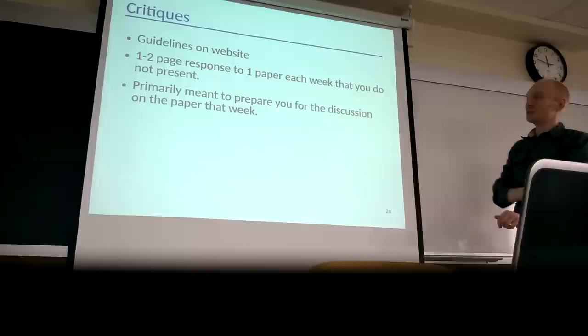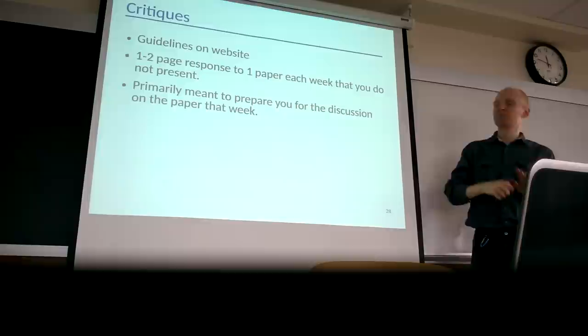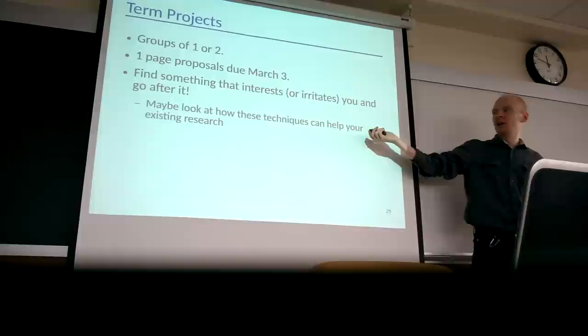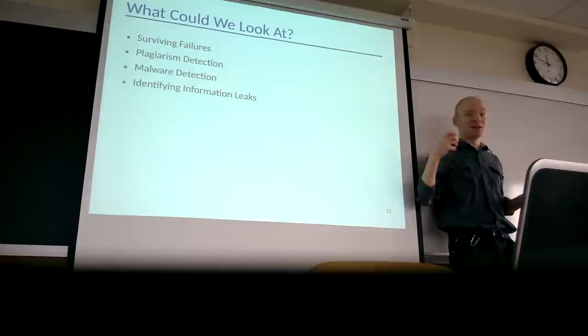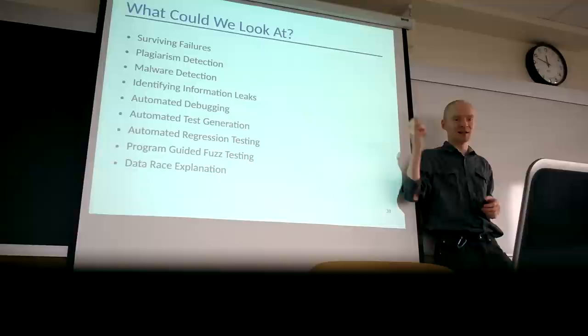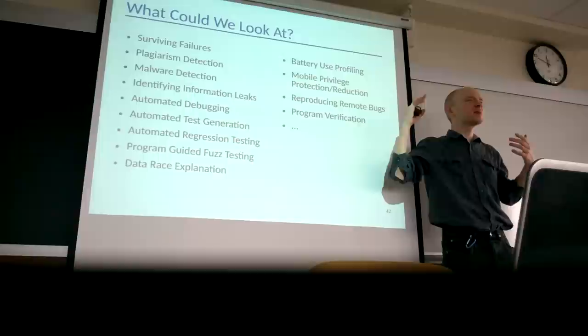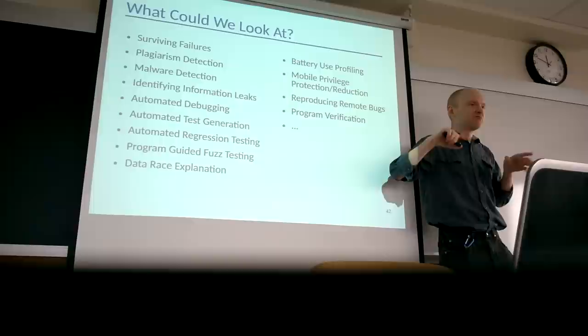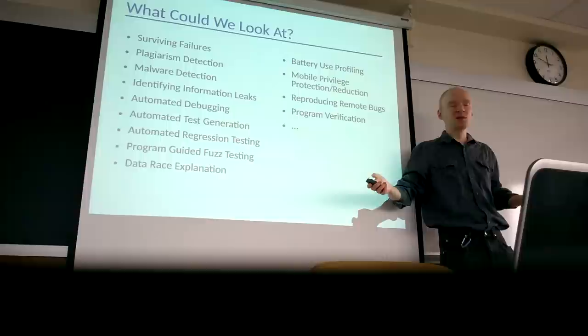In terms of critiques. Again, guidelines on the website. Mostly to prepare you for the discussion. There's a LaTeX template on the website as well for creating the critiques. Should be straightforward. So you can look at things like, in particular, how these techniques might help your research that you're doing. Or just any other sort of critical analysis will fall into this. Again, guidelines on the website. So what can we look at? Here's a laundry list. Things like surviving failures, plagiarism detection, malware detection, identifying information leaks, automated debugging, automated test generation, automated regression testing, program guided fuzz testing, data race explanation, battery profiling, mobile privilege protection or reduction, reproducing remote bugs, program verification. The list goes on, right? There's an infinite number of interesting problems with software you can actually look at. There is a link or list on the website of conferences with potentially interesting papers. I encourage you to go and look at them. Find something you think might be interesting to you. And we can take a look at it in the class.